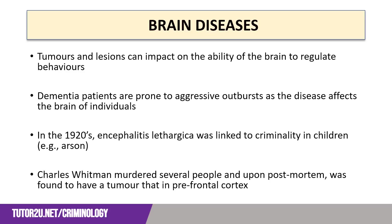A final example of the impacts of brain illness and disease is provided by Charles Whitman, also known as the Texas Tower Sniper. Whitman, a former Marine, stabbed and killed his mother and wife before killing a further 14 people, 11 of whom he shot from the 28th floor of the University of Texas clock tower. A post-mortem on Whitman revealed a tumour in his prefrontal cortex that was believed to have inhibited his ability for rational thought.